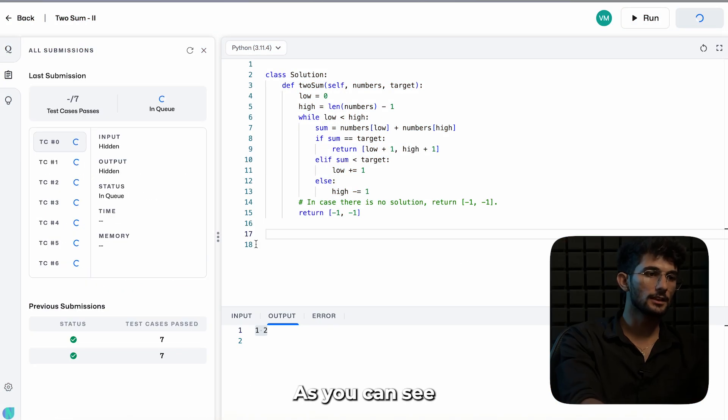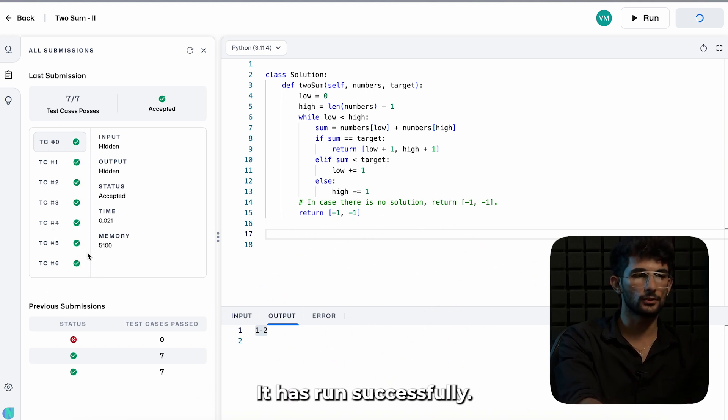Let's quickly run this code. As you can see it is running everything and it says it is successful. Test case zero, one, zero to six. It has run successfully.